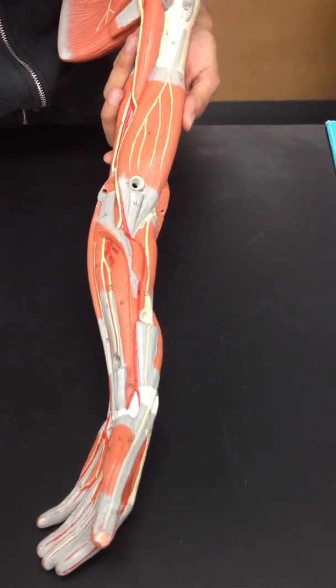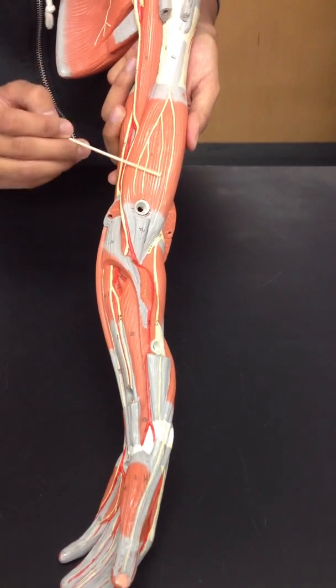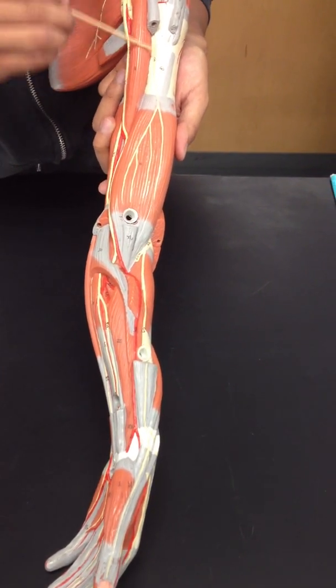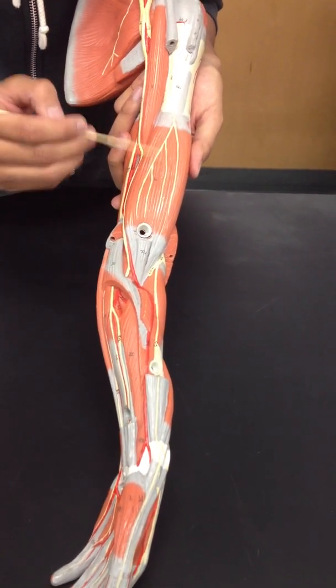The musculocutaneous nerve. That's found within biceps and brachii. We took it apart, so it shows it right on the brachialis. Number 60. So it's all of that? Musculocutaneous nerve.